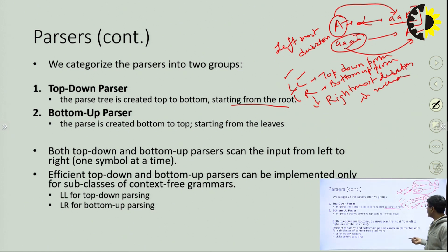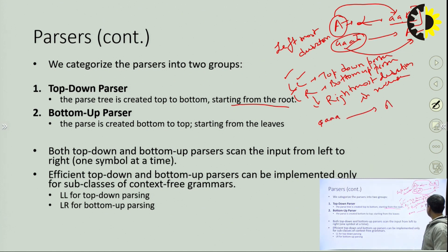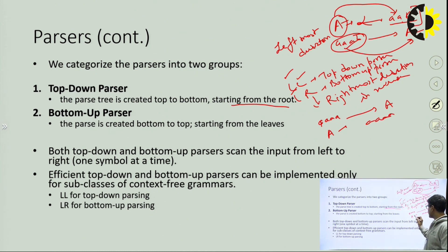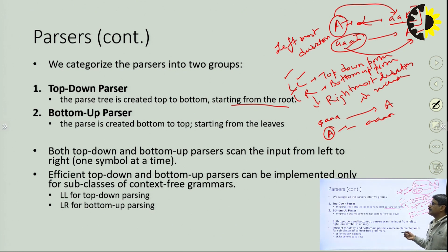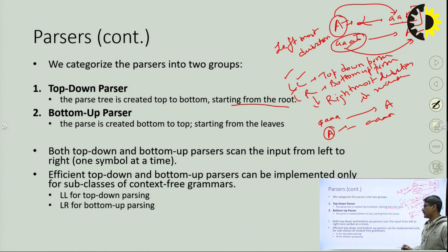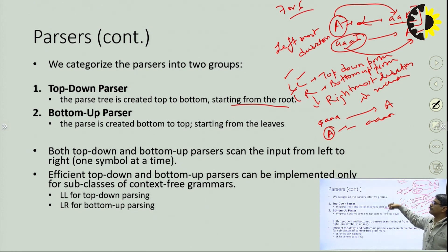In the LR parser — the bottom-up parser — we use rightmost derivation in reverse. Whenever we approach any sentence to reach the start symbol, we must derive it using rightmost derivation performed in reverse. We will discuss this in detail in the shift-reduce parser. Efficient top-down and bottom-up parsers can be implemented only for subclasses of context-free grammars — LL for top-down parsing and LR for bottom-up parsing.